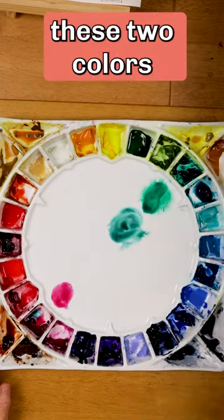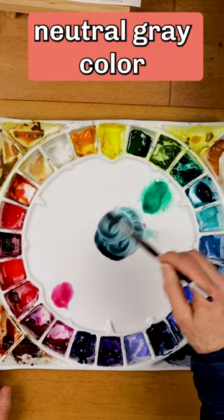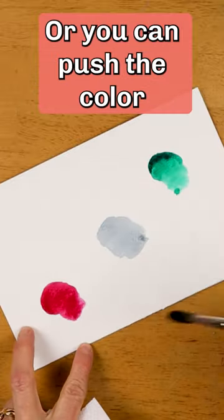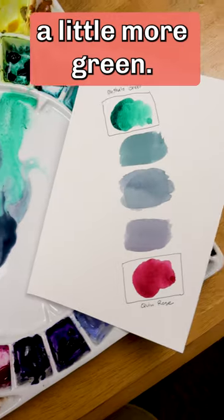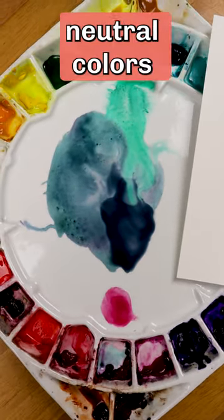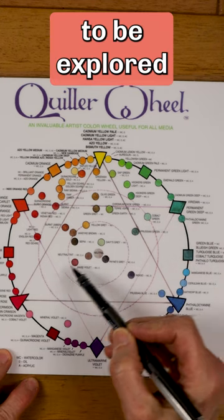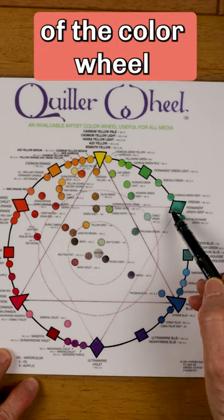Now mix these two colors until you get a beautiful, neutral gray color. Or you can push the color a little more red or back again a little more green. There is a world of beautiful, neutral colors to be explored on the inside of the color wheel.